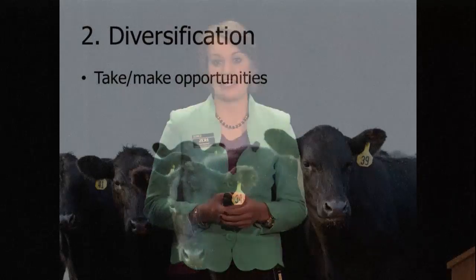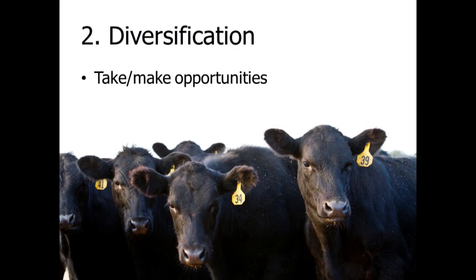The second topic is diversification — taking or making opportunities. To illustrate this, consider a cow-calf example. A cow-calf producer typically weans calves in the fall and sells them, but you can take advantage of the opportunity of retaining those animals through the preconditioning phase or even longer if you have the forage resources. Many people say they can't because they have a limiting resource — often a set of pens. They don't have a place to keep calves separate or get them up if they get sick. So sometimes you have to make the opportunity and build pens to capture that additional weight gain and pricing.